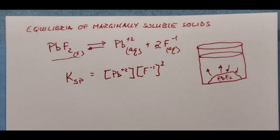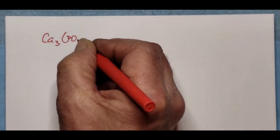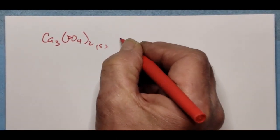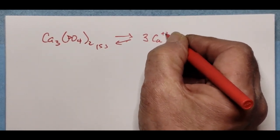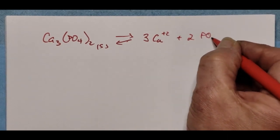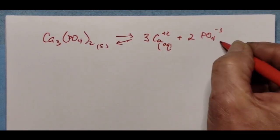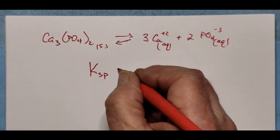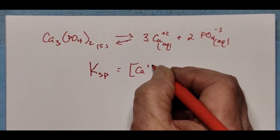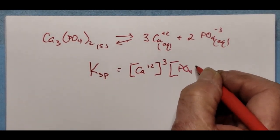Let me show you a couple more examples. For instance, calcium phosphate — not very soluble in water — establishes an equilibrium to release three calcium ions each with a +2 charge, and two phosphate ions each with a -3 charge. These appear in the equilibrium expression, so the Ksp for calcium phosphate is the calcium concentration cubed times the phosphate concentration squared.